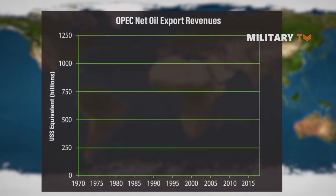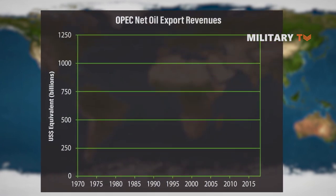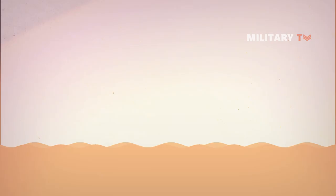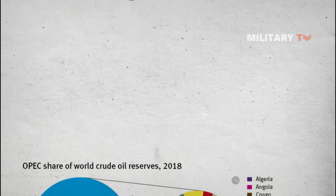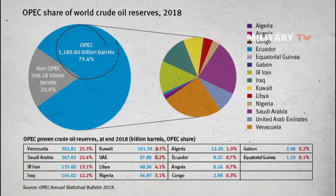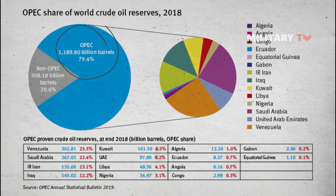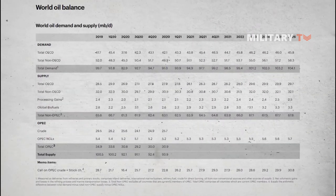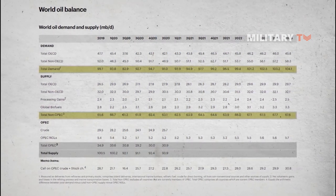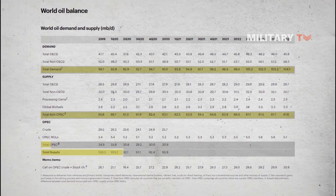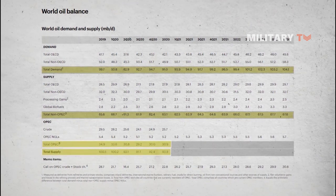OPEC does not decide how much oil costs but can influence prices by controlling oil production. They aim to set production to meet global demand, but if they increase or decrease oil production levels, they can affect the price of oil. Generally, when production goes down, prices go up. According to 2018 statistics, OPEC controls almost 80% of the world's supply of oil reserves. The consortium sets production levels to meet global demand and can influence the price of oil and gas by increasing or decreasing production. OPEC makes decisions based on current supply and demand and also considers future expectations.